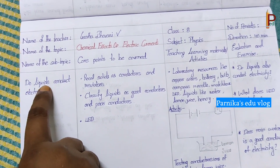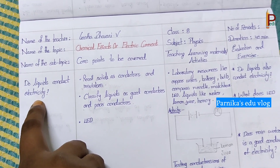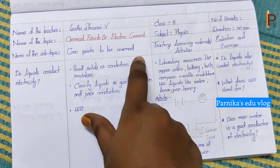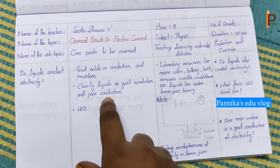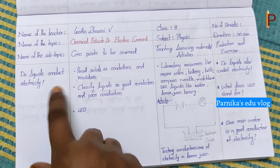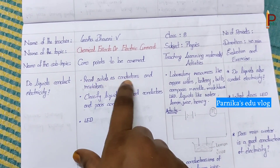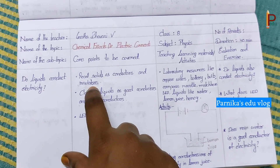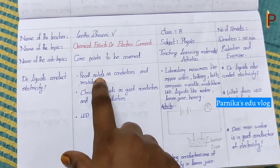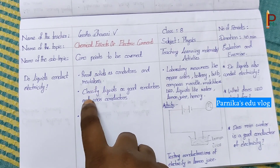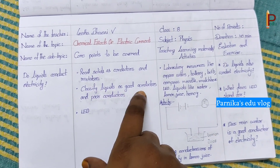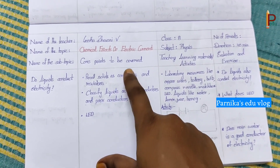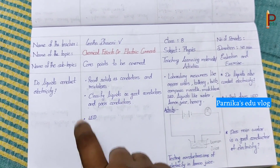The first subtopic is: do liquids conduct electricity? In the core points to be covered column, we have to write what core points we are going to cover in this class. That is: recall solids as conductors and insulators; classify liquids as good conductors and poor conductors; and LED. These are the core points to be covered.